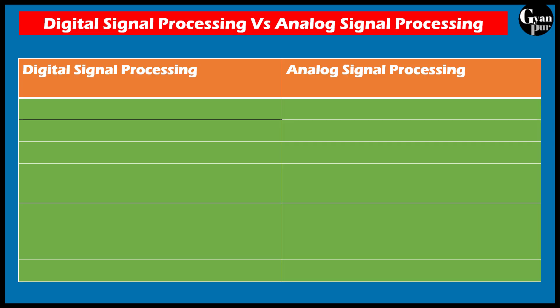So first let's talk about digital signal processing, which I will refer to as DSP in this video, and analog signal processing as ASP. DSP is more flexible whereas ASP is less flexible.